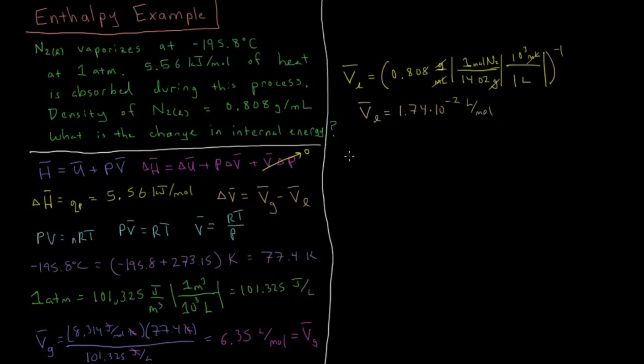So delta V bar, change in our molar volume, is just going to be molar volume of the gas minus molar volume of the liquid. 6.35 minus 1.74 times 10 to the minus 2 liters per mole is going to equal 6.33 liters per mole. So the change in the volume is almost entirely equal to the volume of the gas. The volume of the liquid is almost negligible relative to the molar volume of the gas. Gases are far more diffuse at typical atmospheric conditions than liquids and solids are.